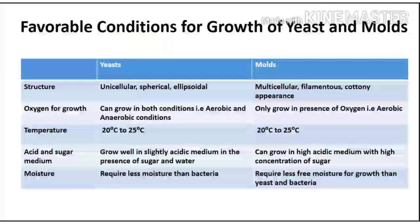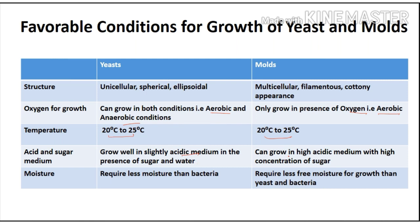Now for favorable conditions for growth of yeast and molds: yeast can grow in both aerobic and anaerobic conditions, whereas molds can grow only in the presence of oxygen (aerobic conditions). Temperatures are mainly between 20 to 25 degrees Centigrade for both yeast and molds. Yeast can grow well in a slightly acidic medium in the presence of sugar and water, whereas molds can grow in a highly acidic medium with high concentration of sugar. Molds require less free moisture for growth than yeast and bacteria.